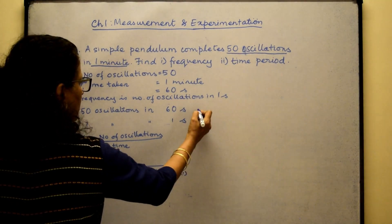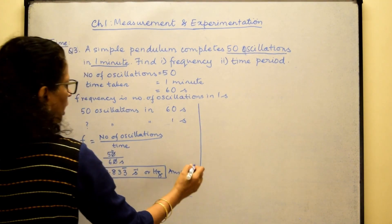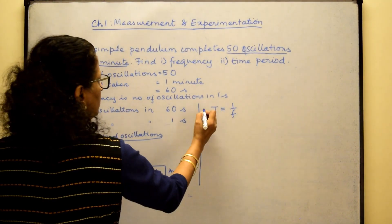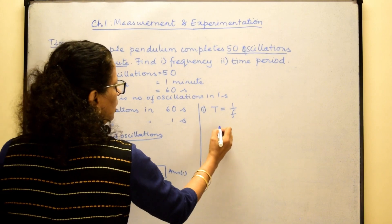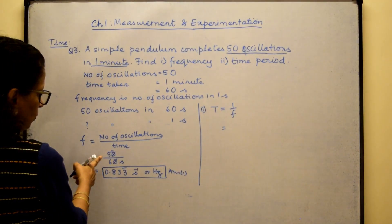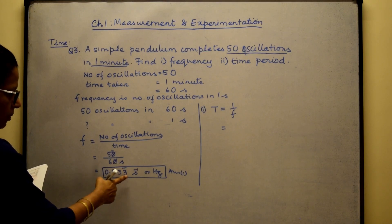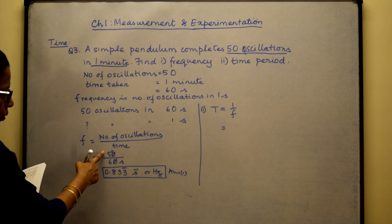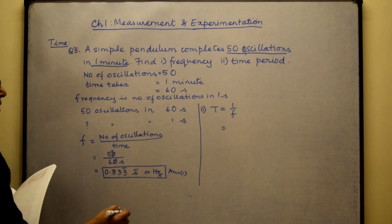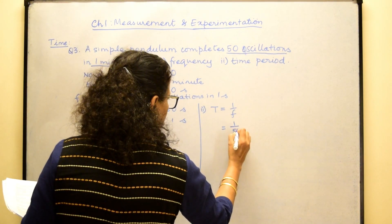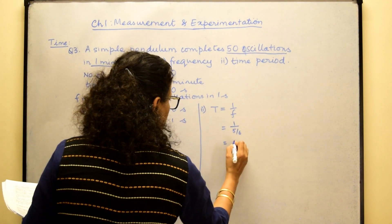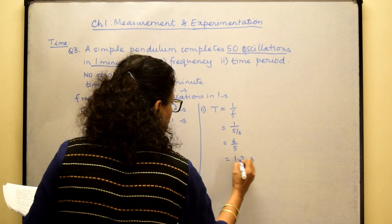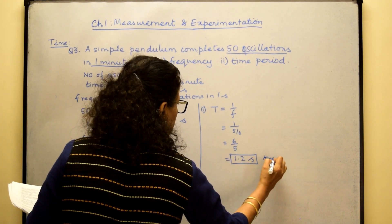For the second part, time period is inversely proportional to frequency: T = 1/F. Since the frequency is the recurring decimal 50/60 = 5/6, we take the reciprocal: T = 1 ÷ (5/6) = 6/5 = 1.2 seconds. So the time period is 1.2 seconds.